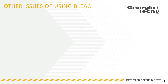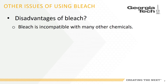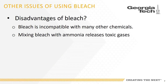Even though bleach is readily available and inexpensive, it does have a dangerous disadvantage. Bleach is incompatible with many other chemicals. Examples are ammonia, acids, hydrogen peroxide, some organic solvents, and some metals. Mixing bleach with ammonia releases toxic acids, and the reaction or the release may occur violently.